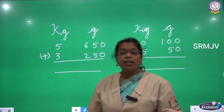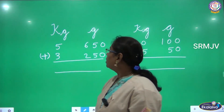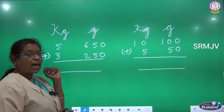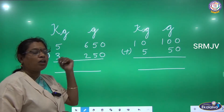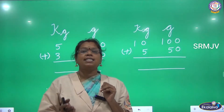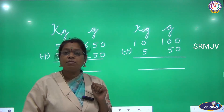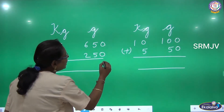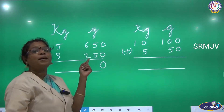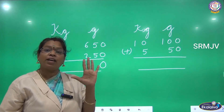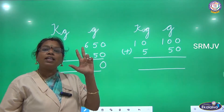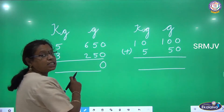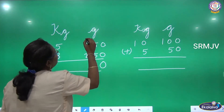Now we are going to add both kilograms and grams. We have 5 kilograms and 650 grams, and we are going to add 3 kilograms and 250 grams. We start from the right side — from the grams, followed by the kilograms. Zero plus zero gives 0. Next, 5 plus 5: five in the mind, five in the finger — five, six, seven, eight, nine, ten. We get 10, so we write 0 in the tens place and carry 1 to the hundreds place.